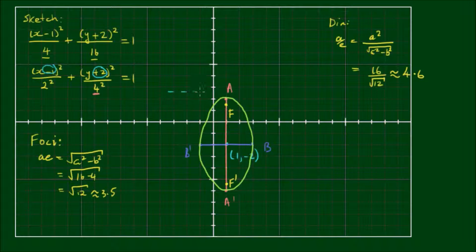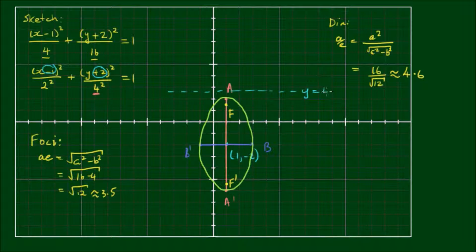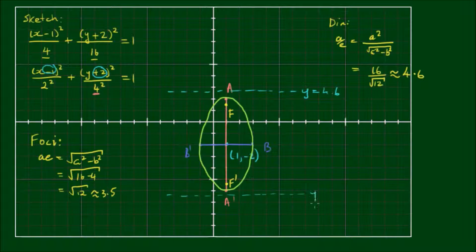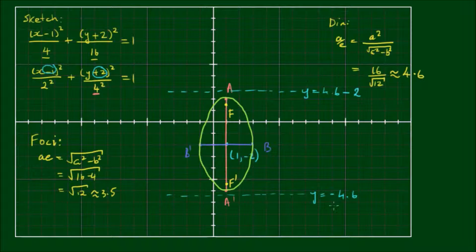So at roughly 4.6 units above the center point we have directrix y equals 4.6, and similarly at 4.6 units below the center point we have directrix y equals negative 4.6. To be more precise, we should account for the center being shifted 2 units below the origin in the y direction, so y equals 4.6 minus 2 and y equals negative 4.6 minus 2.